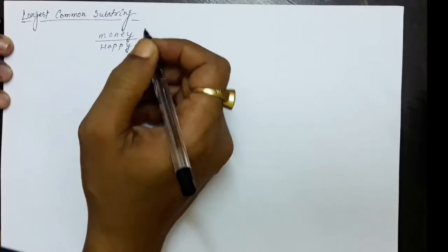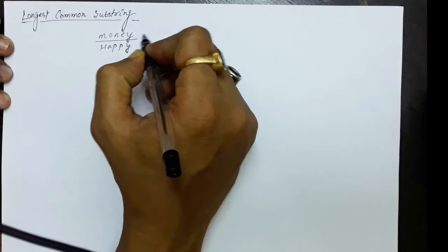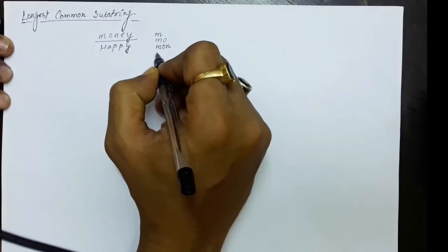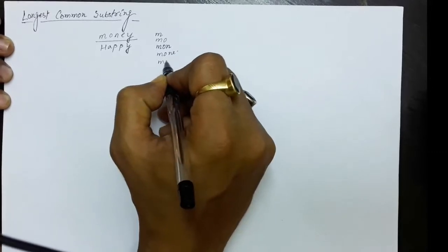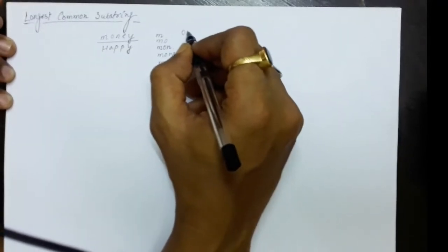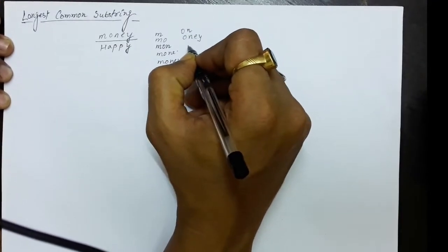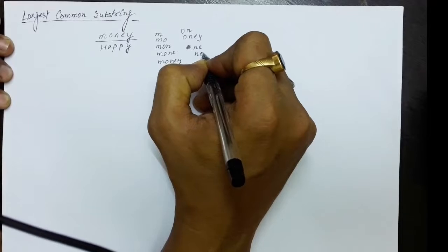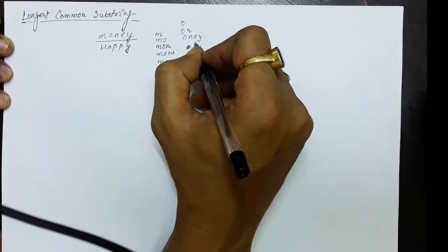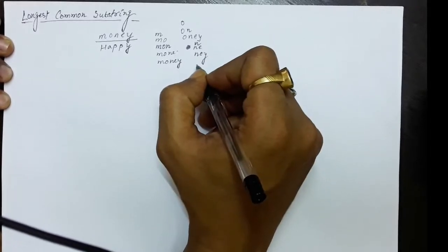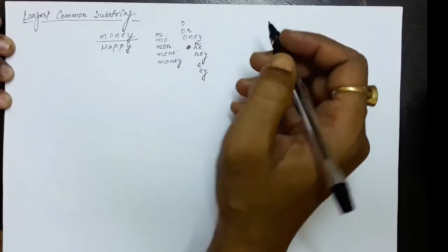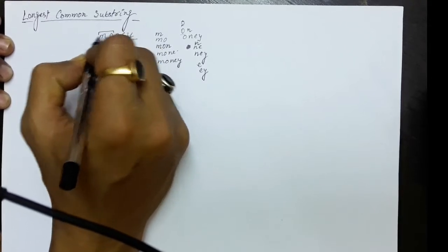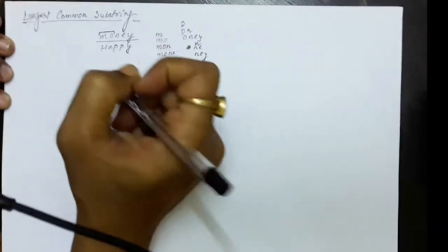For example, given a string like 'money', the substrings that can be generated may be M, MO, MON, MONY, NE, NEY, O, N, E, EY, and so on. The substring means: given a string, anything that appears in sequence from the string is actually a substring of it.